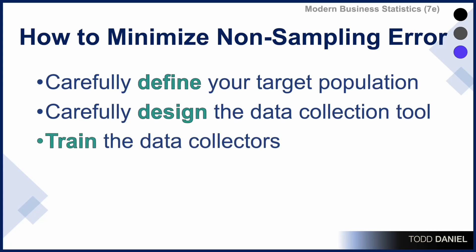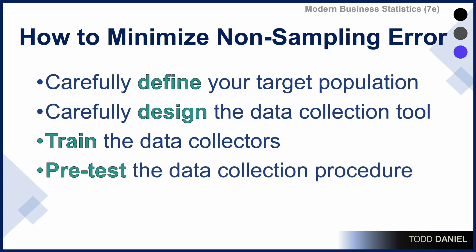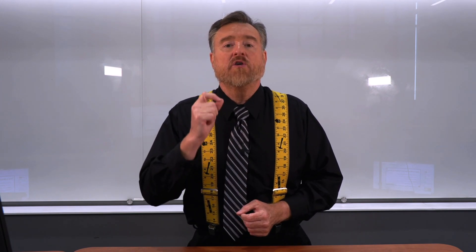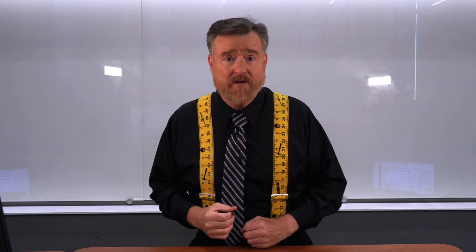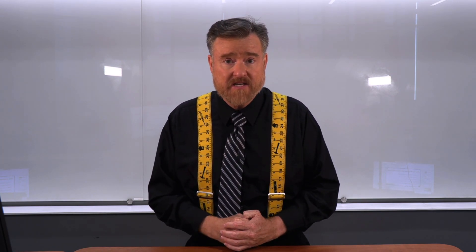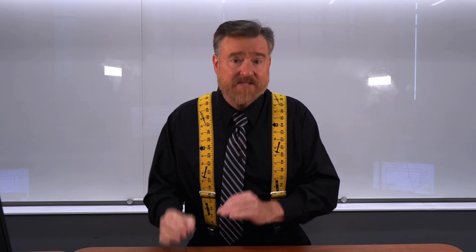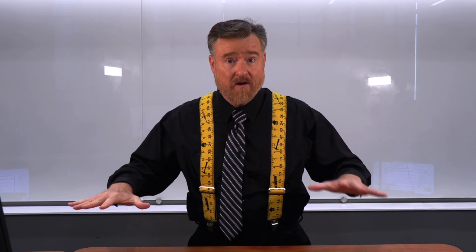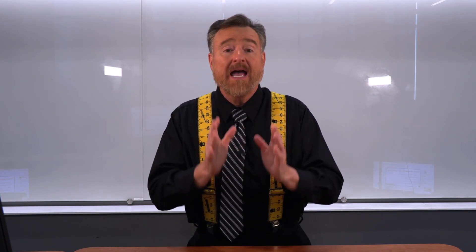Train your data collectors. Don't trust that people are going to know exactly what to do in their data collection — make sure that you have trained them, that they know what to expect and how to respond. Pre-test your data collection procedure; do a pilot study. Run a small-scale version of your survey. Trust that no matter how much effort you have put into getting it right, you have missed something. Mr. Murphy will always rear his head — there will always be some unexpected outcome. Therefore, you should plan for that contingency. Running a pilot study and testing your survey before you roll it out at large scale is an excellent way to minimize your non-sampling error and to make sure that you spot and fix problems before they occur.